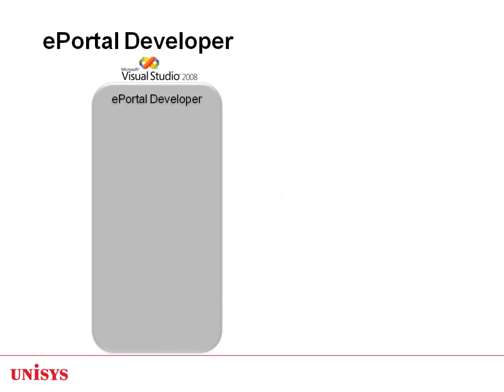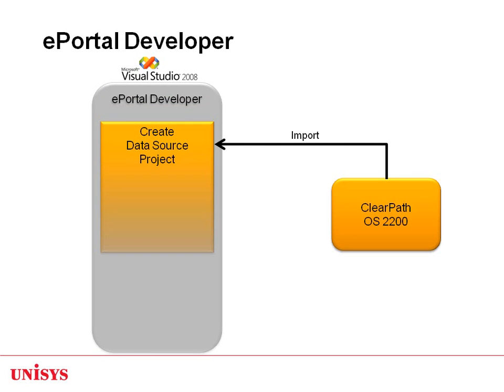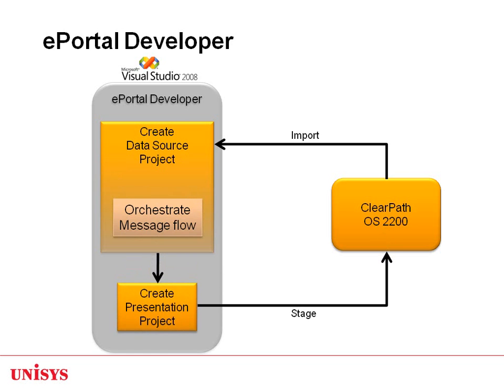There are three steps involved in any ClearPath OS 2200 application modernization process. Step 1 is to create a data source project by capturing the interfaces of existing ClearPath OS 2200 applications into the data source project. Step 2 is to orchestrate the flow of data between the modernized application and the existing mainframe application. Step 3 is to create the presentation projects and stage them onto the ClearPath OS 2200.